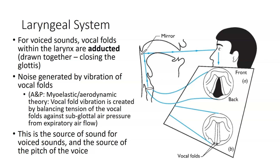We need the right balance of air pressure from below and muscular tension holding the vocal folds close to each other, but not clamping them shut tightly, in order to get phonation to happen. This is the primary source of sound for voiced sounds, and this is where the pitch of the voice comes from — that's part of our intonation.